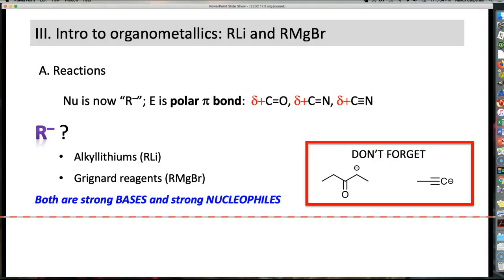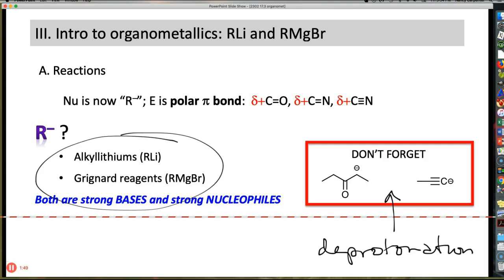That said, don't forget that you've already known some carbanions. Don't forget your enolates. Don't forget your alkyl anions. They're still good carbon anions. What makes them different is that you get to these guys by deprotonation. And you'll see that these guys have to be arrived at by a completely different route.